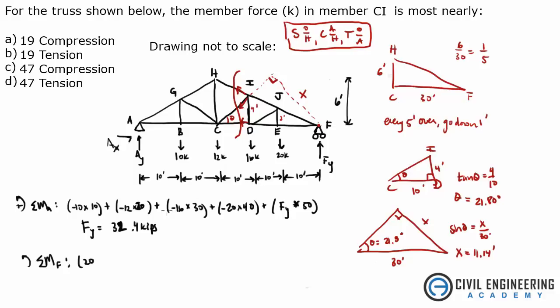So sum of the moments, that's 20 kips times 10 feet, plus 16 kips times 20 feet, plus CI times 11.14 feet, equals zero. So I get a CI equal to a negative 46.7 kips. That negative means compression. Answer C.